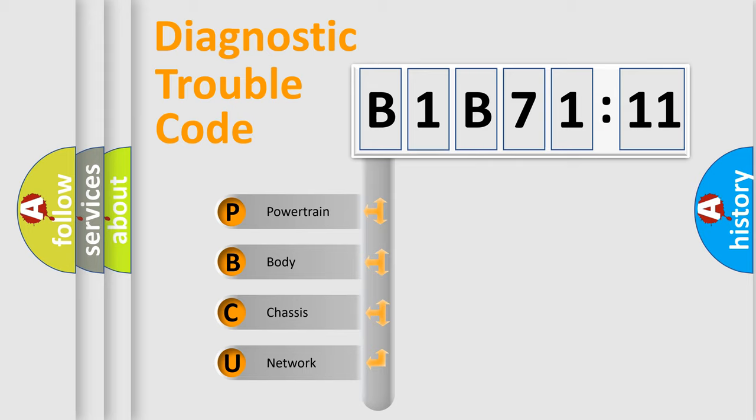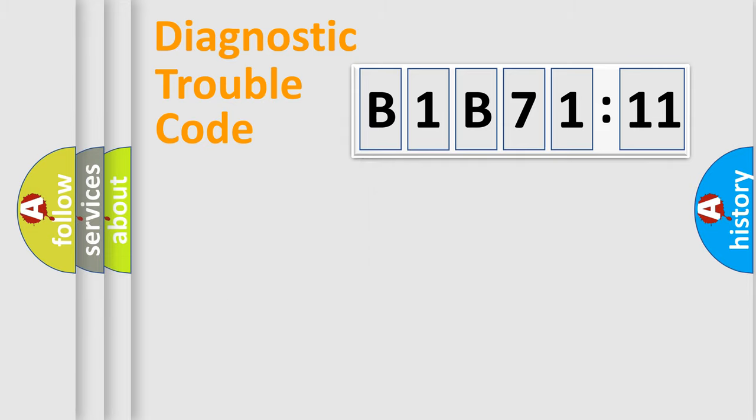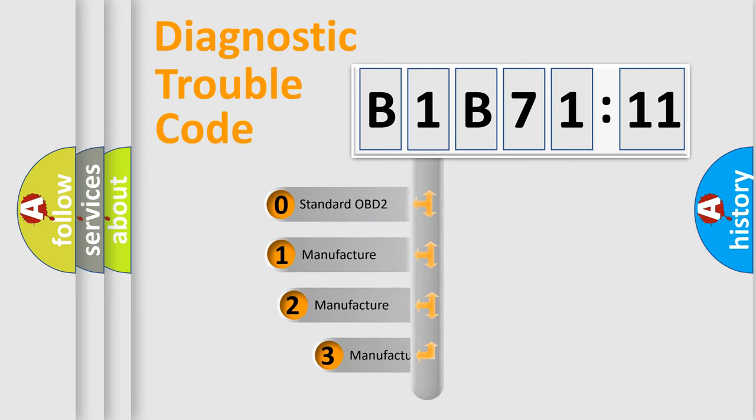We divide the electric system of automobile into four basic units: Powertrain, Body, Chassis, and Network. This distribution is defined in the first character code.